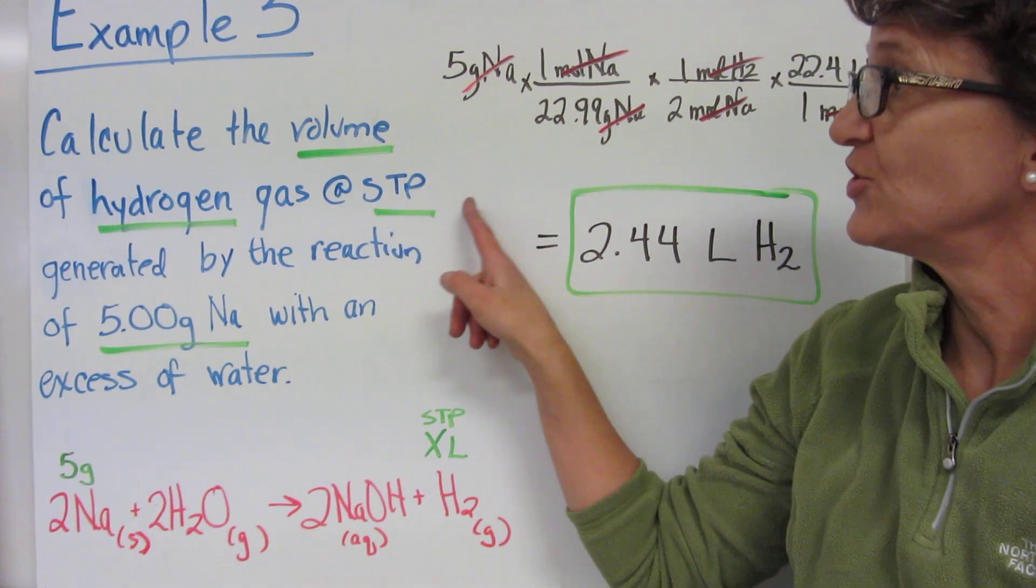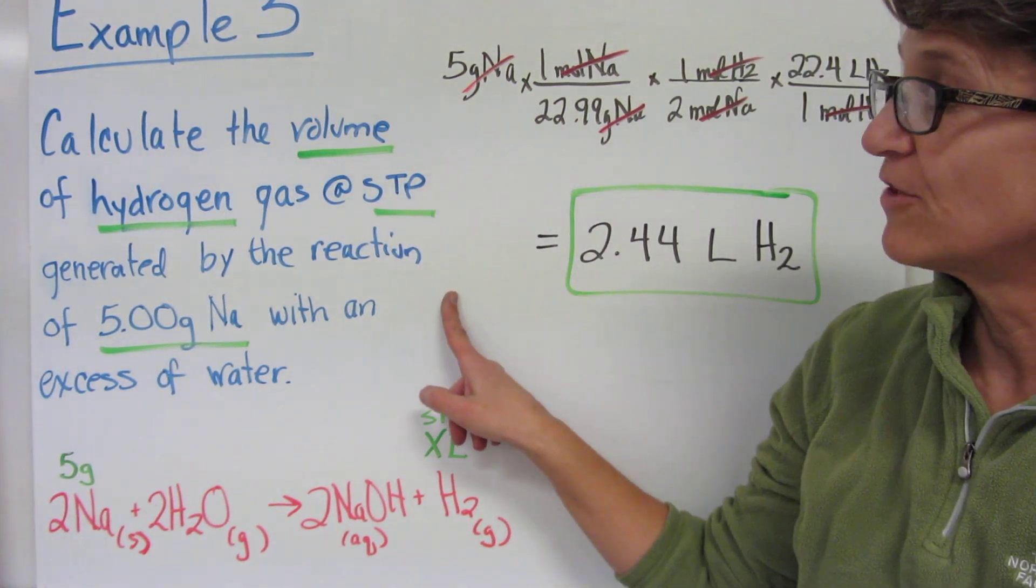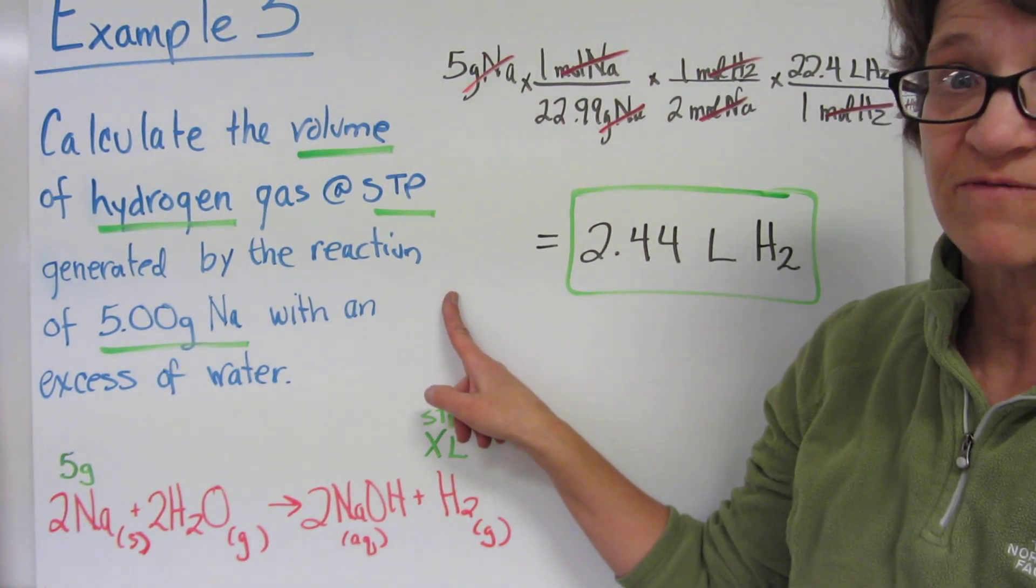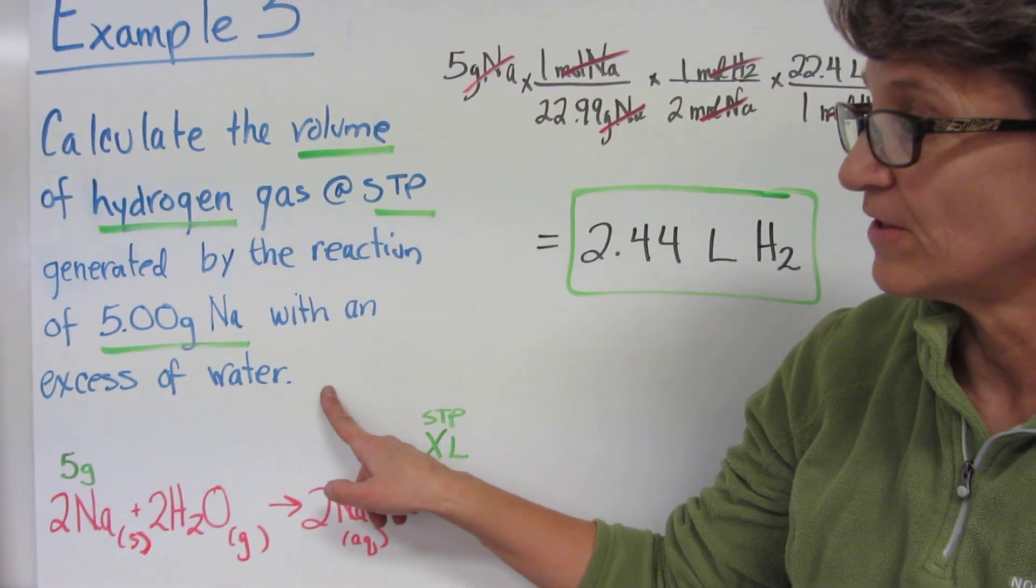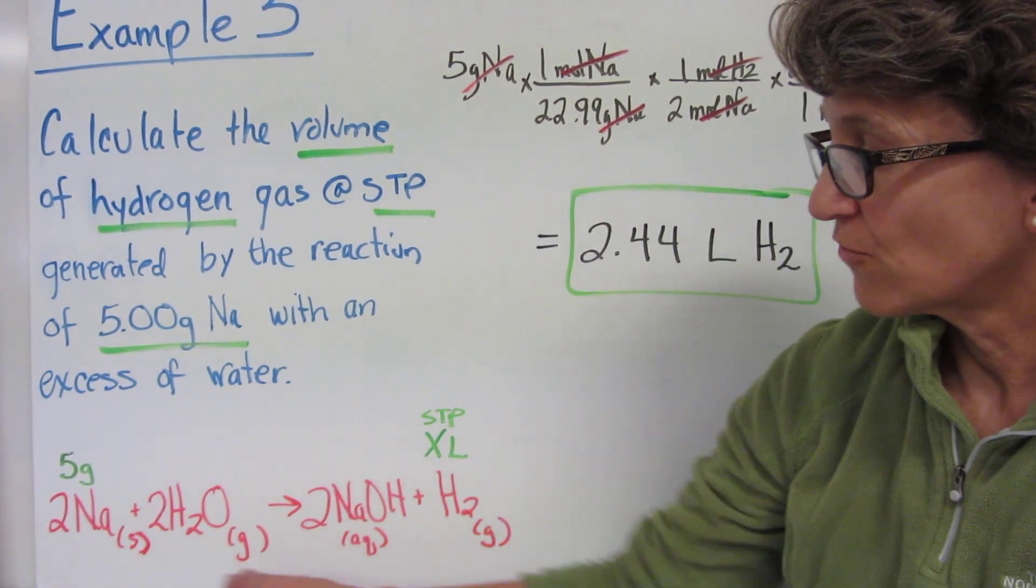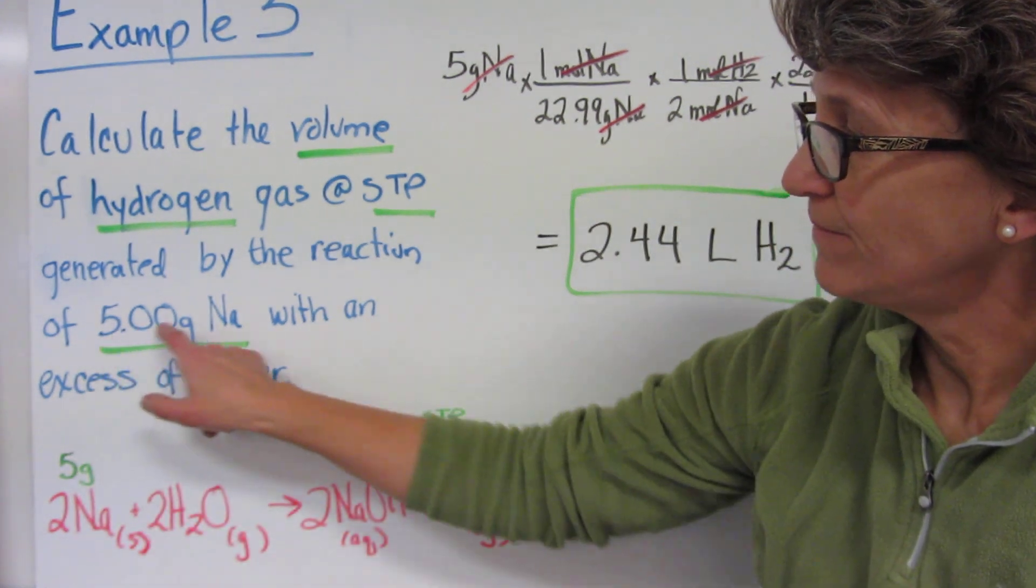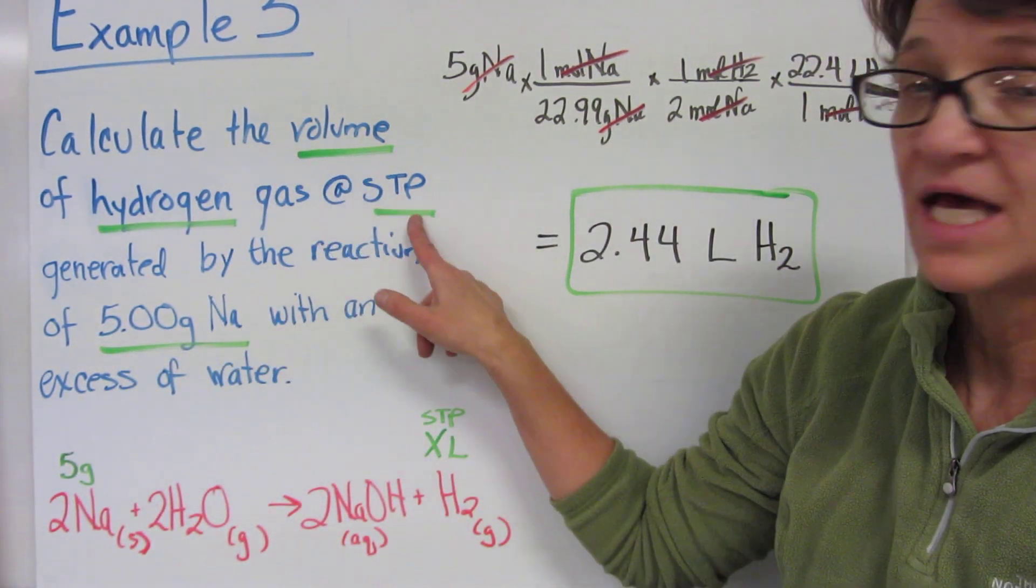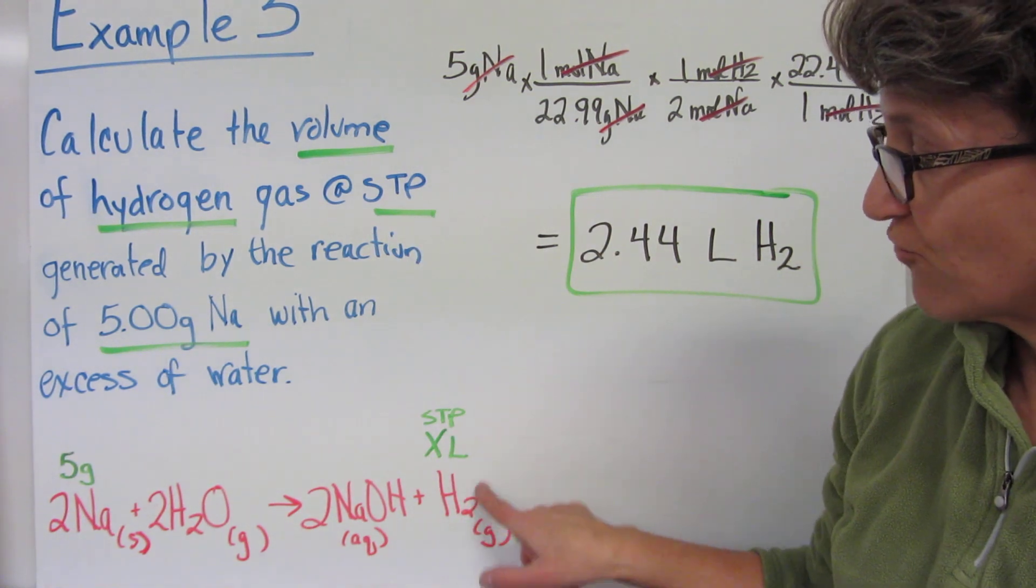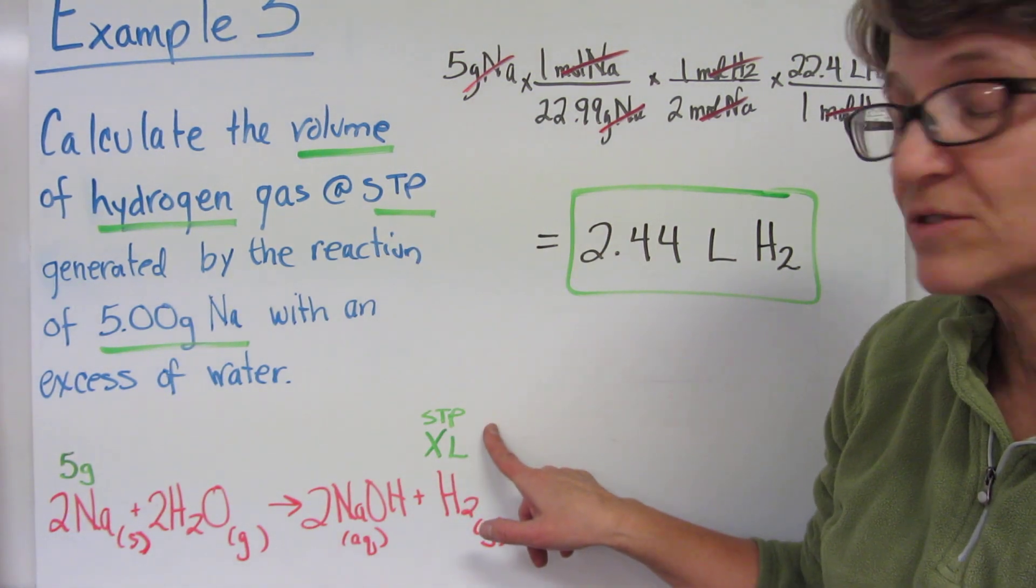Let's calculate the volume of hydrogen gas at STP generated by the reaction of five grams of sodium with an excess of water. My balanced equation is written, I have five grams of sodium, and I want the volume of hydrogen at STP. So I've written that right above the hydrogen in the balanced equation.